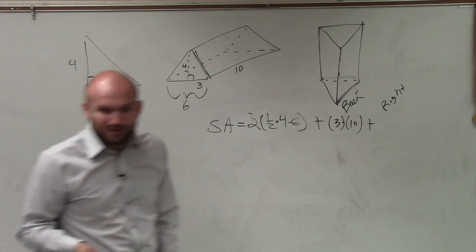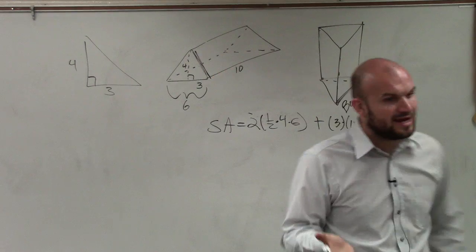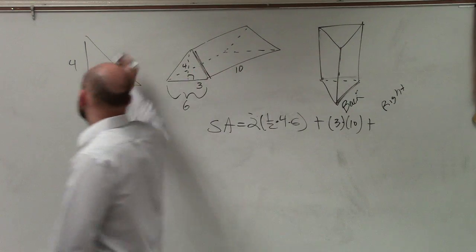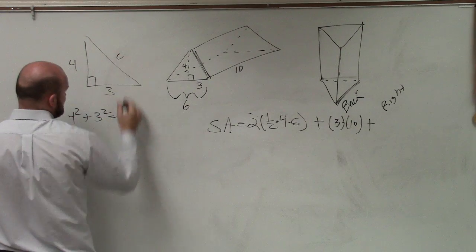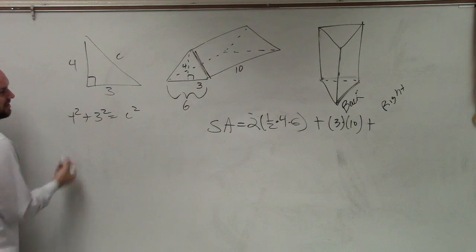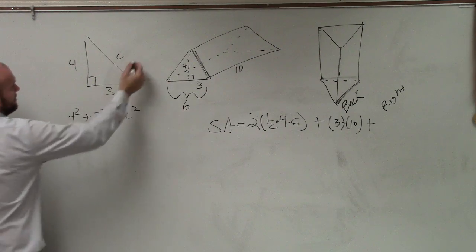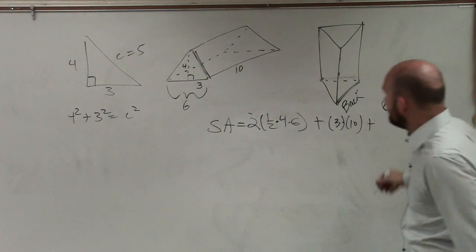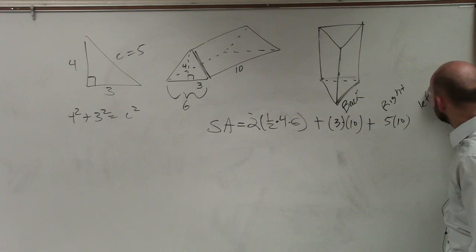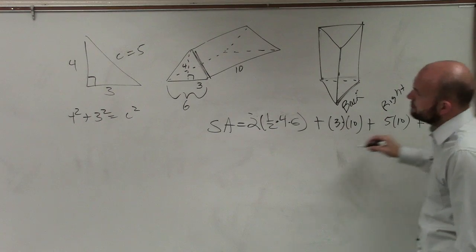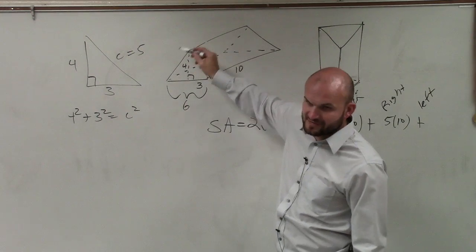But now I have a triangle, a right triangle, and I have two legs. I can easily figure out the third side. So I do 4 squared plus 3 squared equals, let's call that C squared. Well, you can also identify this is a Pythagorean triple, and C equals 5. So, therefore, I'm going to have 5 times 10, and then we look at the left side. Plus, which is going to be, again, 5 times 10, right?